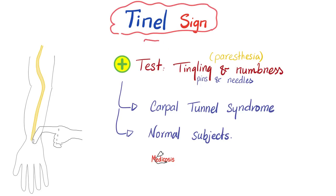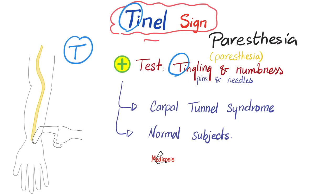Let's start with the physical exam — the Tinel test. The way to remember it: Tinel looks for tingling and numbness. You tap on the flexor retinaculum — tap on the median nerve at the wrist. Normal people feel no tingling or numbness, but patients with carpal tunnel syndrome are more likely to feel tingling, numbness, or pins and needles — paresthesia. However, the Tinel sign is not the most accurate test; a positive result can occur even in normal subjects.